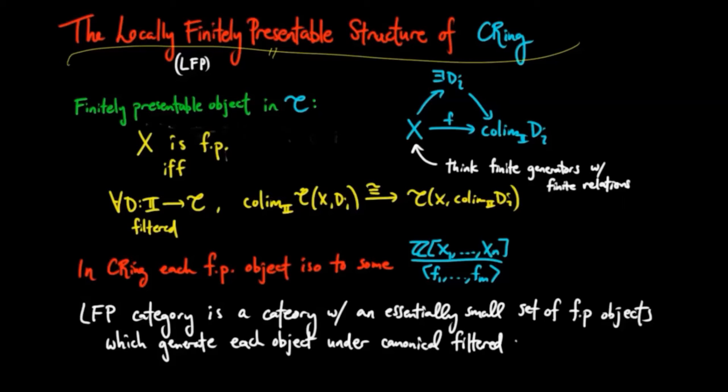What we mean by a canonical filtered co-limit: suppose we have this ring A, there's this diagram given by the slice category of the subcategory of commutative rings given by the finitely presentable objects to the ring A, and then just forgetting the structural morphisms from those objects to A.